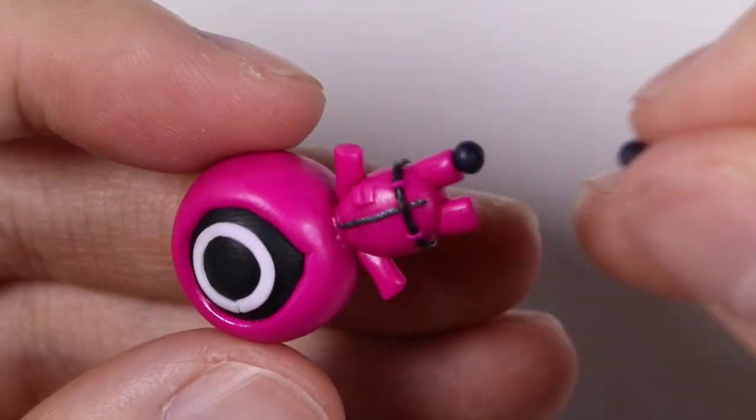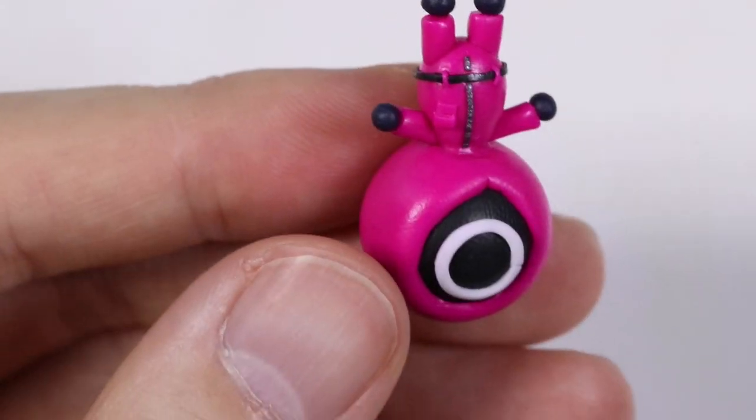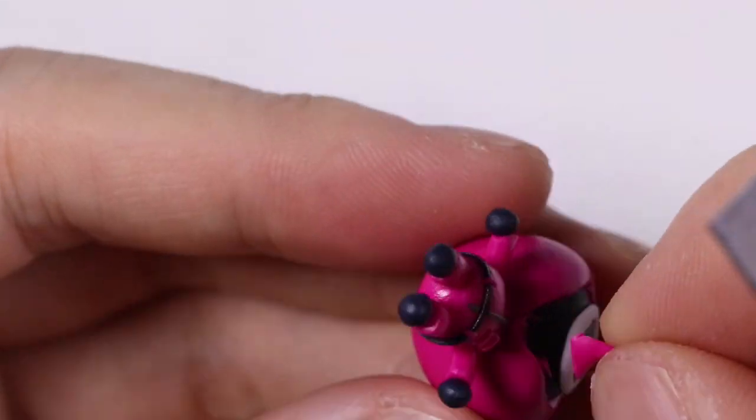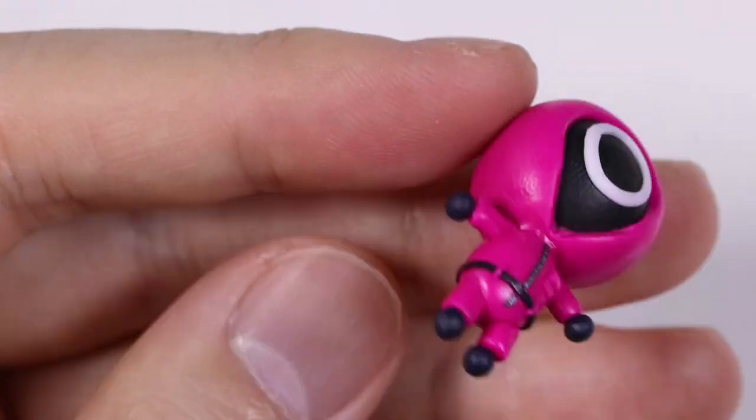And then I place balls of black clay for the little feet and hands. And finally, I'm going to take my blade and cut out a little bit of excess part of the hoodie in a V-shape, so it looks like it's kind of coming out of the jacket.